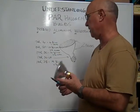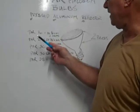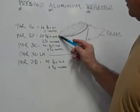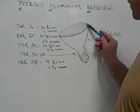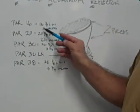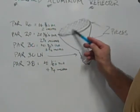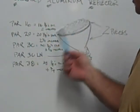Now a PAR 16 is the diameter of 16 eighths of an inch across the face of the bulb. So 16 eighths is equal to 2 inches. So a PAR 16 would be 2 inches.